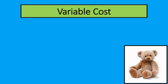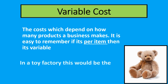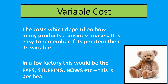The second type of costs are called variable costs. These are costs which do depend on how many products a business makes — the more they make, the more of these things they use up. If it's per item, then it's variable. In our toy factory, it would be per toy; in a car factory, per car; in a pizza shop, per pizza. In our toy factory, each bear has two eyes — the more bears you make, the more eyes you use. The more bears you make, the more stuffing and the more bows around their necks. These things are all per bear and are all variable costs.